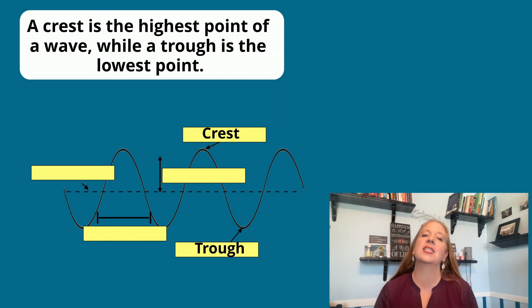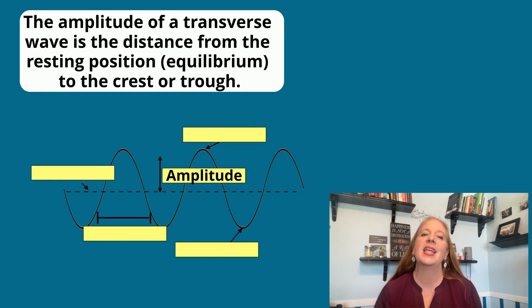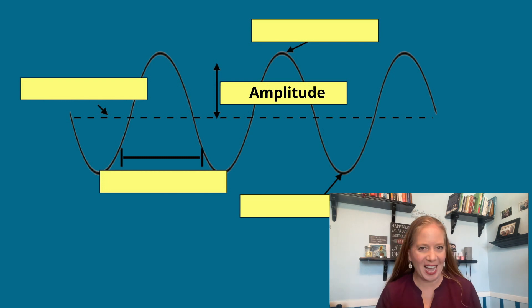A crest is the highest point of a wave, while a trough is the lowest point. The amplitude of a transverse wave is the distance from a resting position, the equilibrium, to the crest or trough. It's the height of the wave.